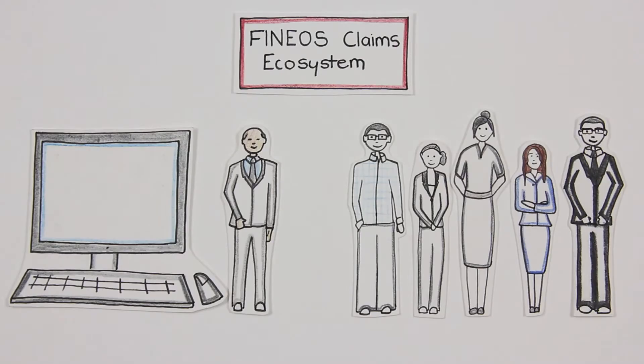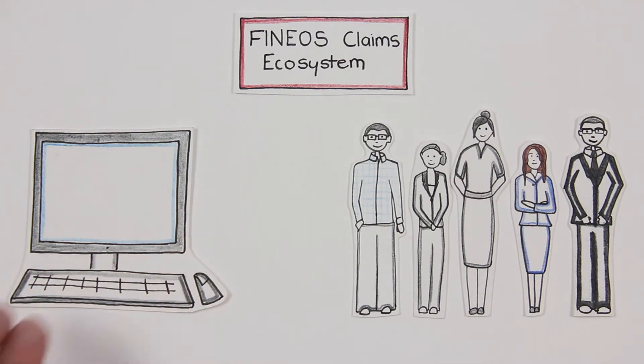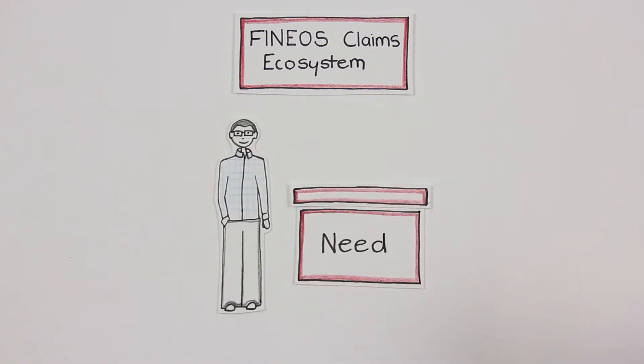The Phineas claims ecosystem is a truly collaborative workspace, removing the claims handler from the critical path at the center of every task and giving all parties access to what they need to move the claim on.